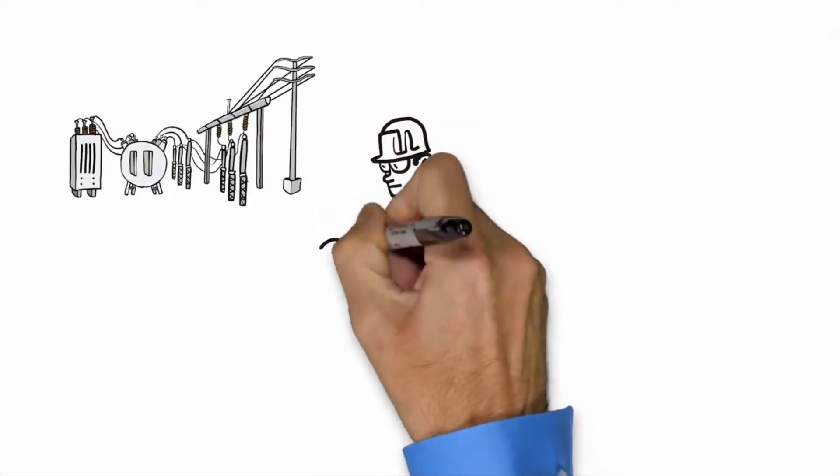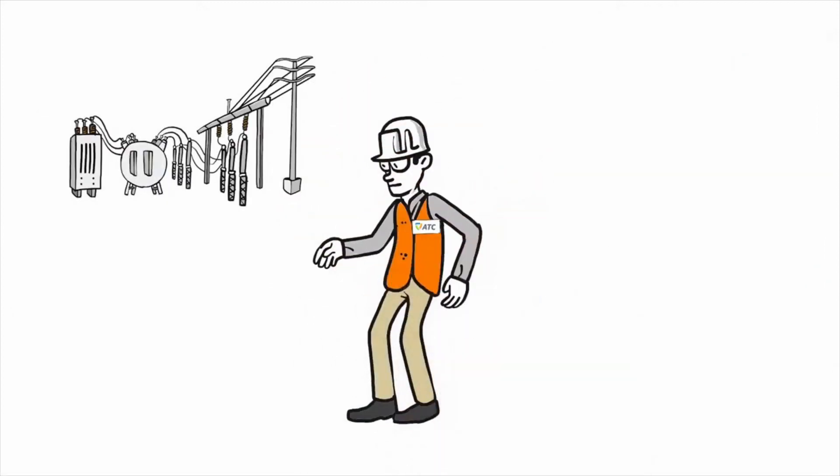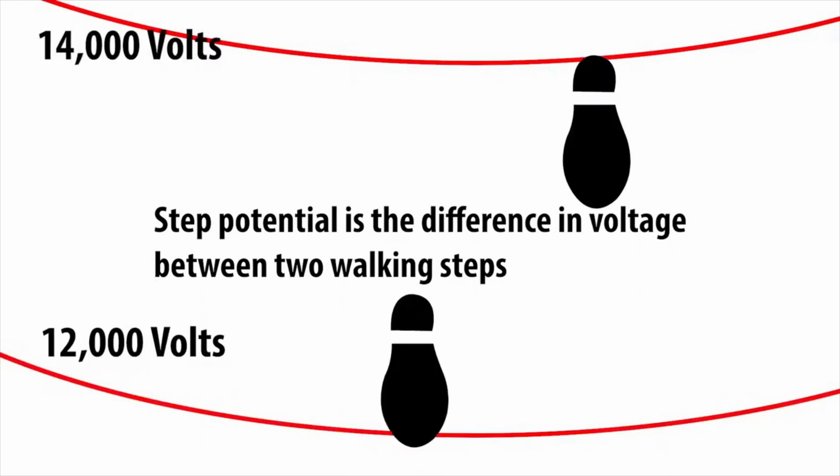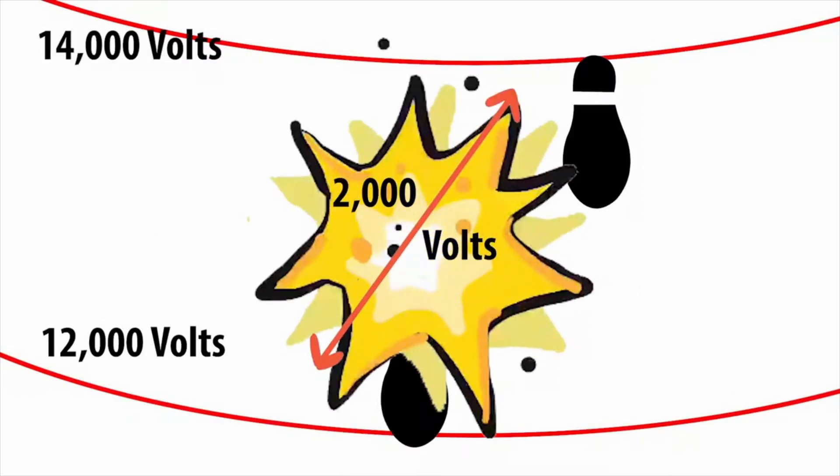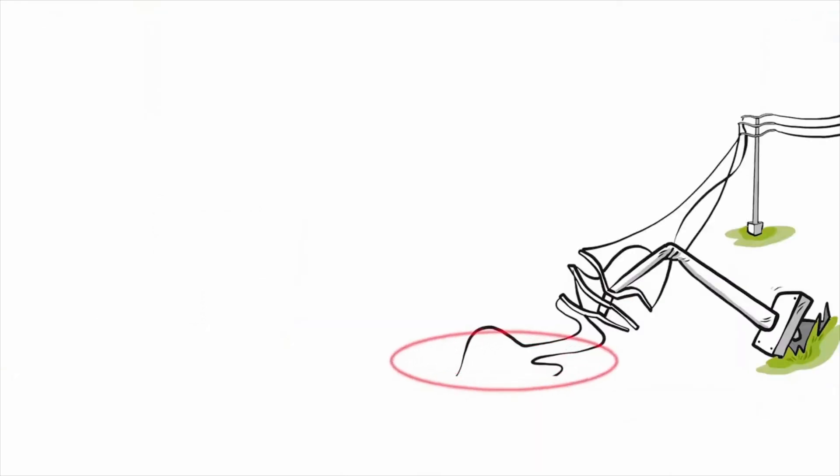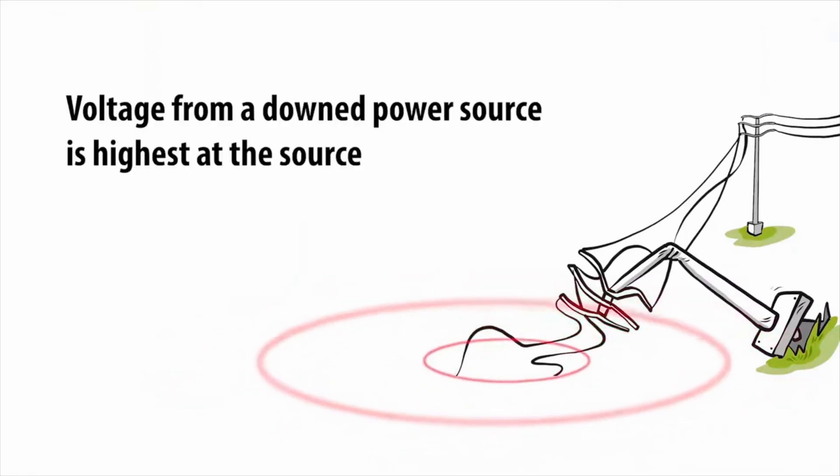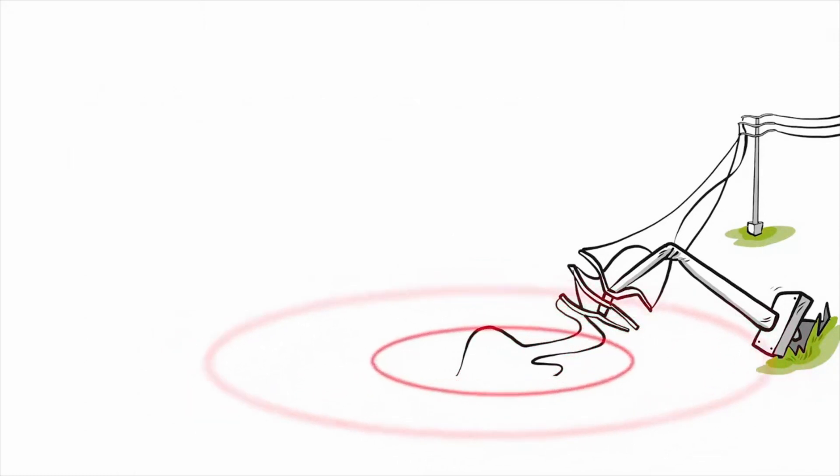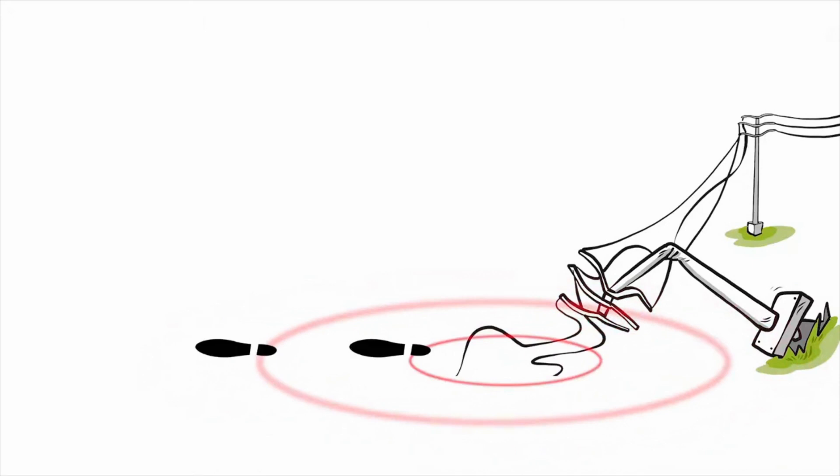It's important to understand step potential when working around electric sources. Step potential is the difference in voltage between two walking steps when the Earth becomes energized from a downed power source. This difference is caused because voltage from a downed power source is highest at the source and fades as it moves outward from the source. Stepping on two different voltages at the same time may electrocute you.